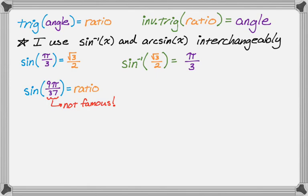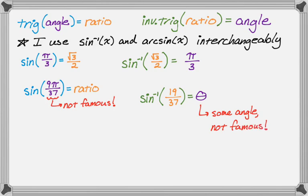The same sort of thing can happen with inverse trig functions. We could try to do the sine inverse of 19/37. 19/37 is not a famous ratio, so I know that this is an angle, but I do not know what angle because it's just not a famous one, so it's not a unit circle angle.